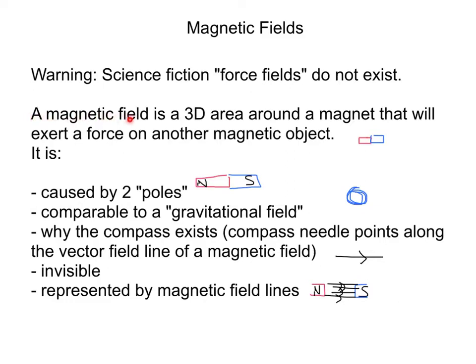A magnetic field is a 3D area around a magnet that will exert a force on another magnetic object. So if I have a magnet, it is going to have an area all around it, everywhere, every direction, that has this force. So if I bring in a metal object, it will be affected by this field.